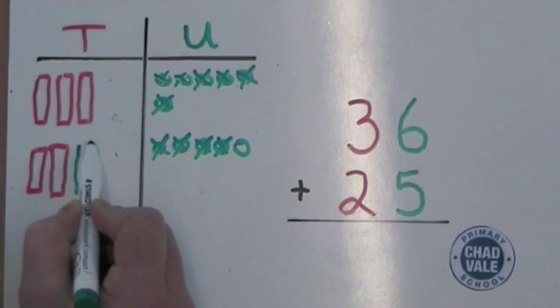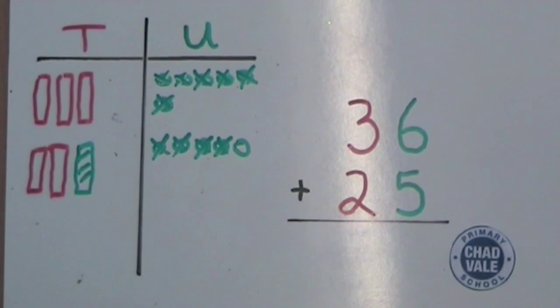When we count ten units, we put them together and draw a tower of ten and put that in the tens column. After that, we count how many units we've got left. One. And we draw that in the units column.